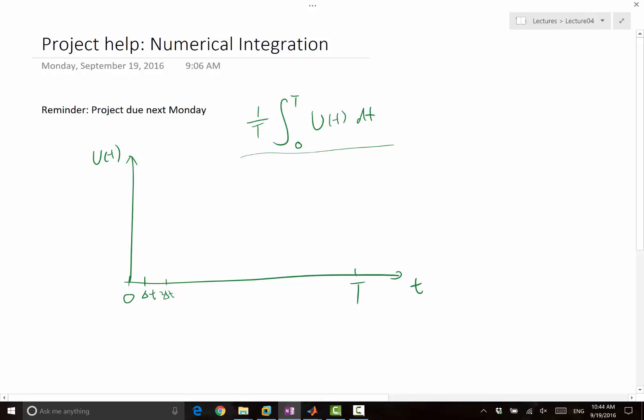So 2 delta T, etc., up to T is equal to n times delta T. And you have a function like this, and the value of the function is known at these grid points. The trapezoidal rule is very simple. It is approximating the integral of the function, which is the area under this curve, by many small trapezoids.